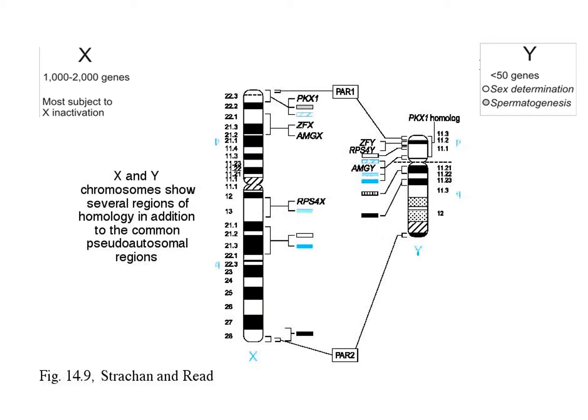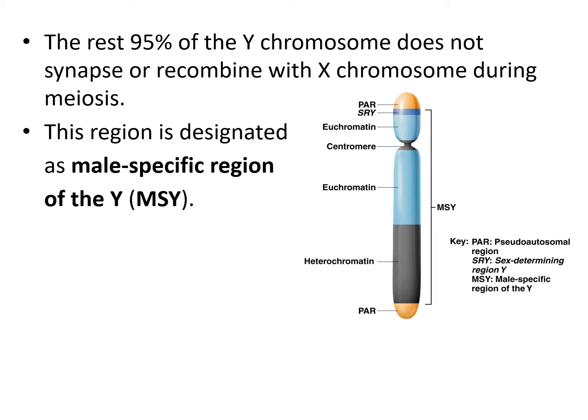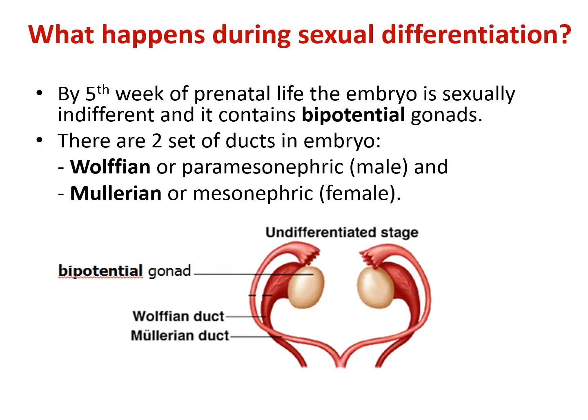This diagram depicts the pseudoautosomal regions where recombination occurs. Along the X and Y there are also some genes that are the same — for example ZFX and ZFY, AMGY and AMGX. The remaining 95% of the Y chromosome does not synapse or recombine with the X chromosome during meiosis. We call this the male-specific region of the Y chromosome, or MSY.